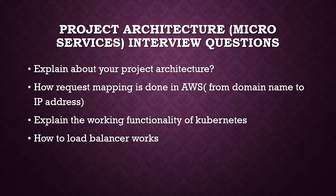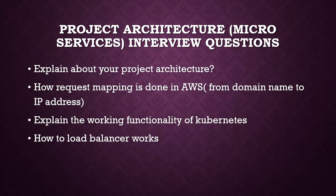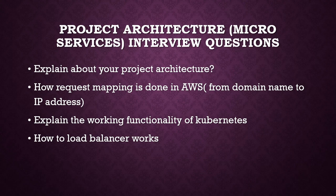Project architecture and microservices interview questions: the project was a microservices project, so questions were asked on that. First, explain your project architecture in detail — irrespective of your experience, you must be good at explaining your project, as this is a deciding question. Second, how is request mapping done in AWS from domain name to IP address. Third, explain the working of Kubernetes. Fourth, how do load balancers work? A load balancer divides traffic equally across multiple running instances so load doesn't build on only one instance.